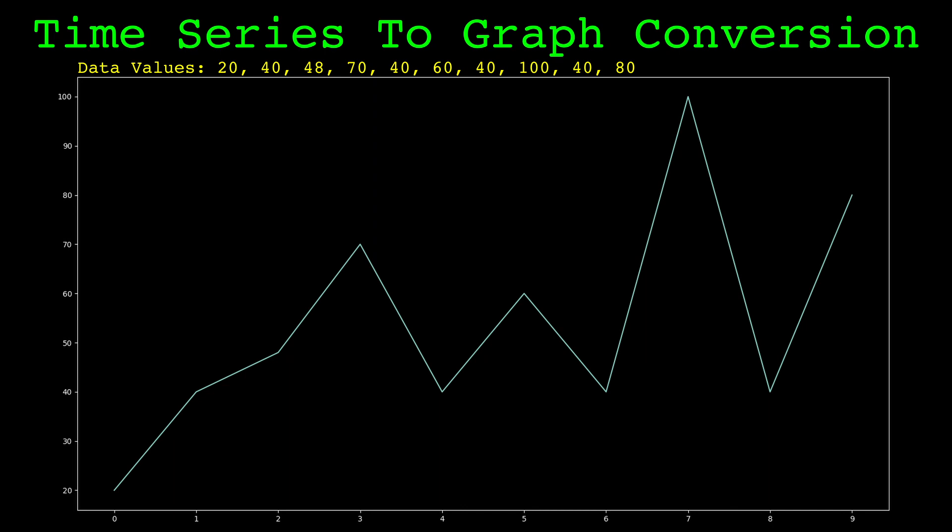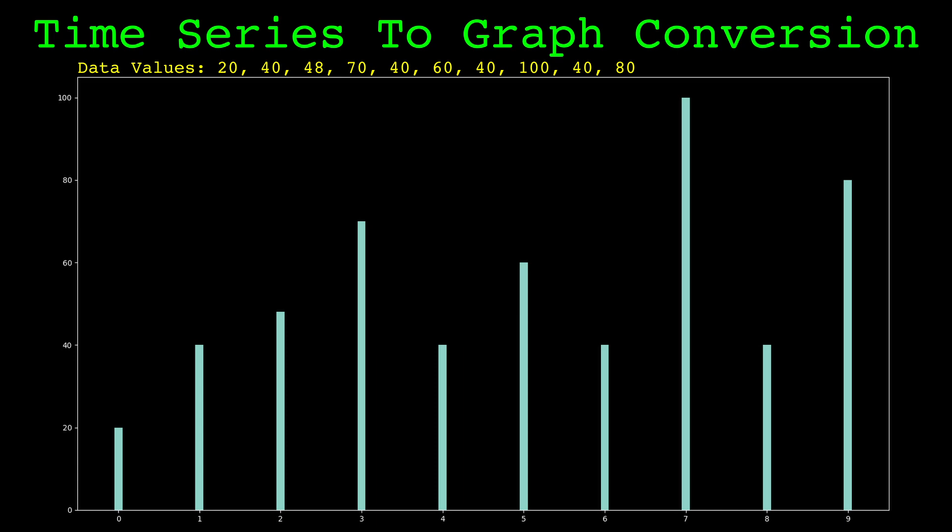Let's look at how to convert a time series to a visibility graph. The process is quite intuitive. We'll use this series of 10 values as an example. I think it's easier to understand how this works if we use a bar chart instead. So here's the same data plotted as a bar chart.